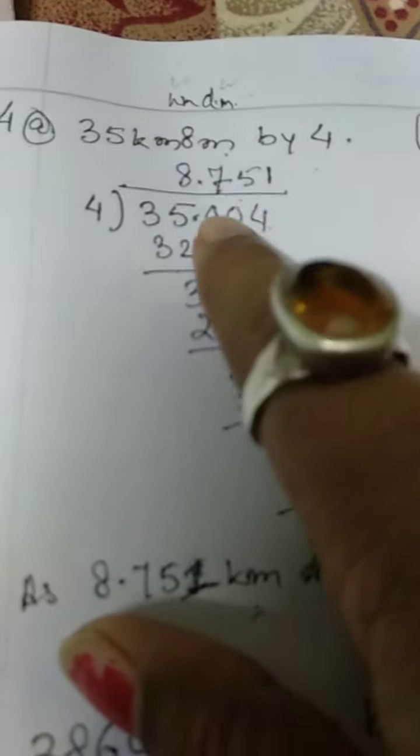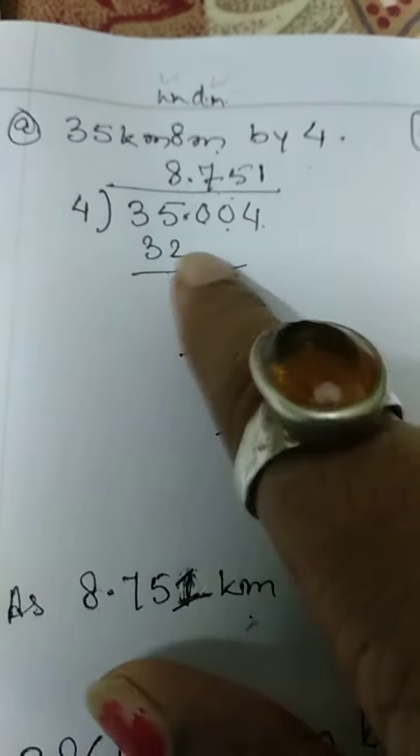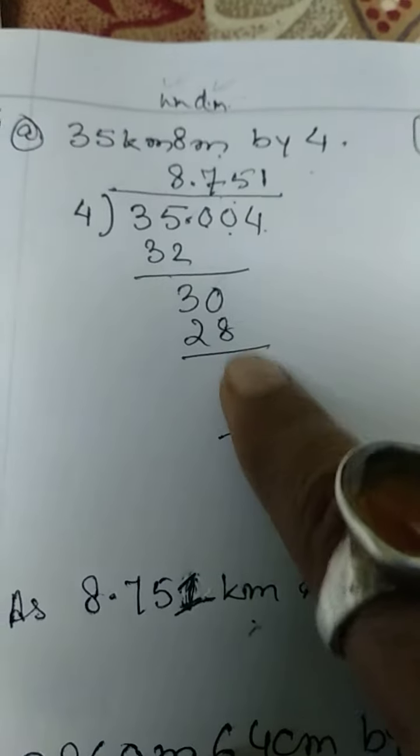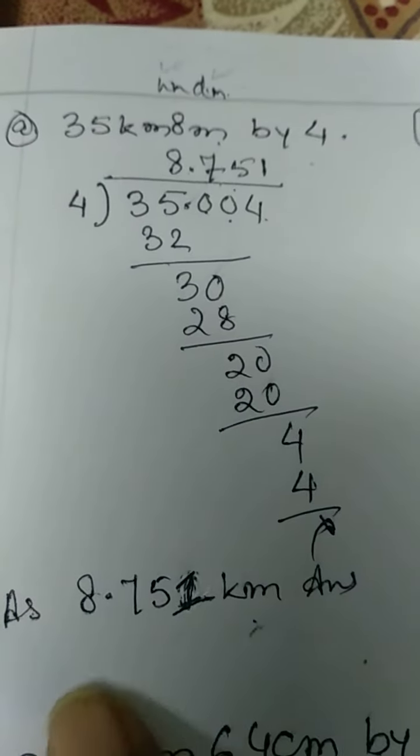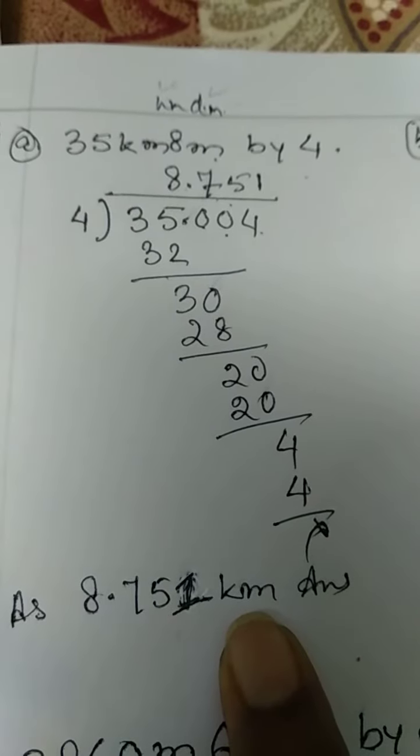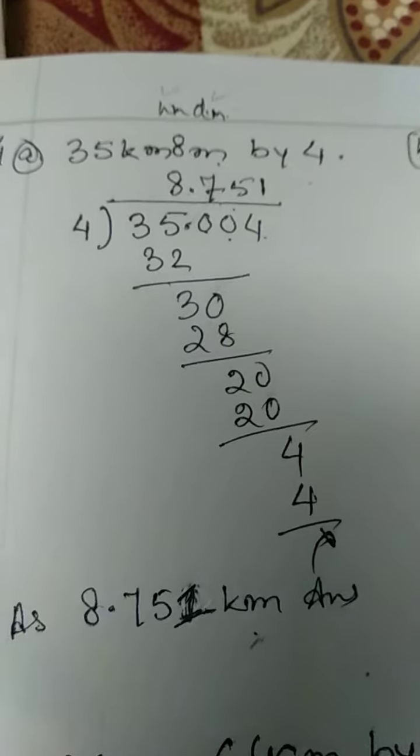So 4, we are dividing it. Now here this point, so I have given point, 32, 30, minus 28, 70, so here it is, 8.751 km. You have to write this, km meter, otherwise the answer will be incomplete.